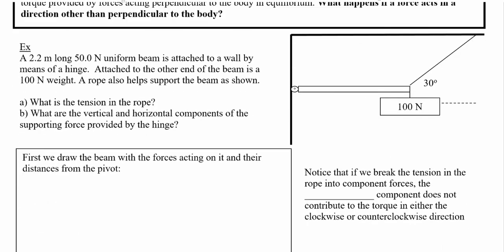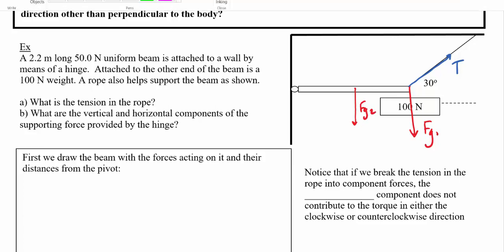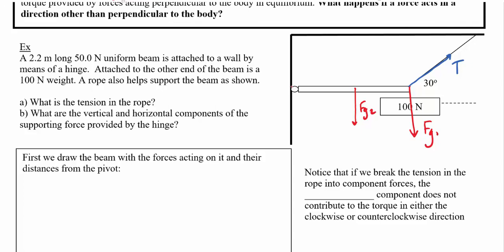Take for example this system: we've got a beam attached to the wall by a hinge and to the roof by a rope, and we're hanging a sign from the end of the beam. Diagramming all the forces, we see gravity pulling downward, tension acting along the rope at an angle, and the beam's own weight — fg1 at the end and fg2 at the center of the beam.